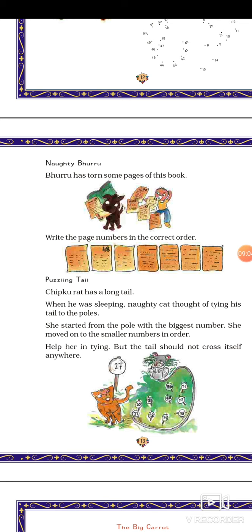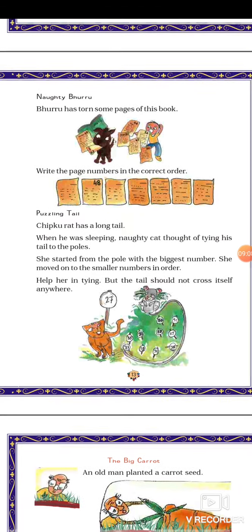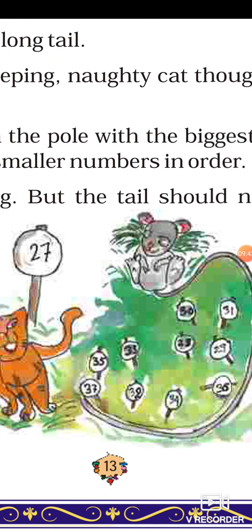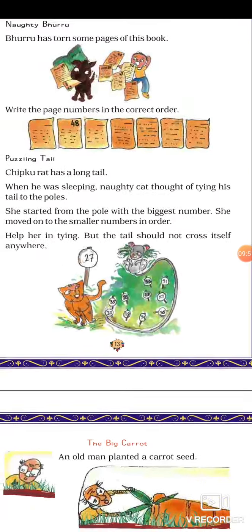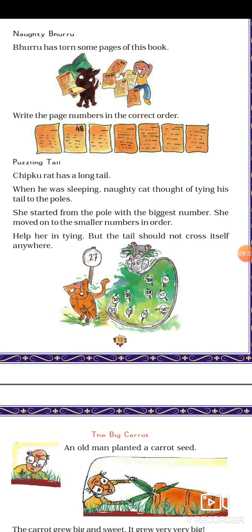The next puzzle: Chipku rat has a long tail. When he was sleeping, a naughty cat thought of tying his tail to the poles. She started from the pole with the biggest number and moved on to the smaller numbers in order. Help her in tying, but the tail should not cross itself anywhere. Find which one is the biggest number, then go from biggest to smallest. The tail should not cross itself anywhere.